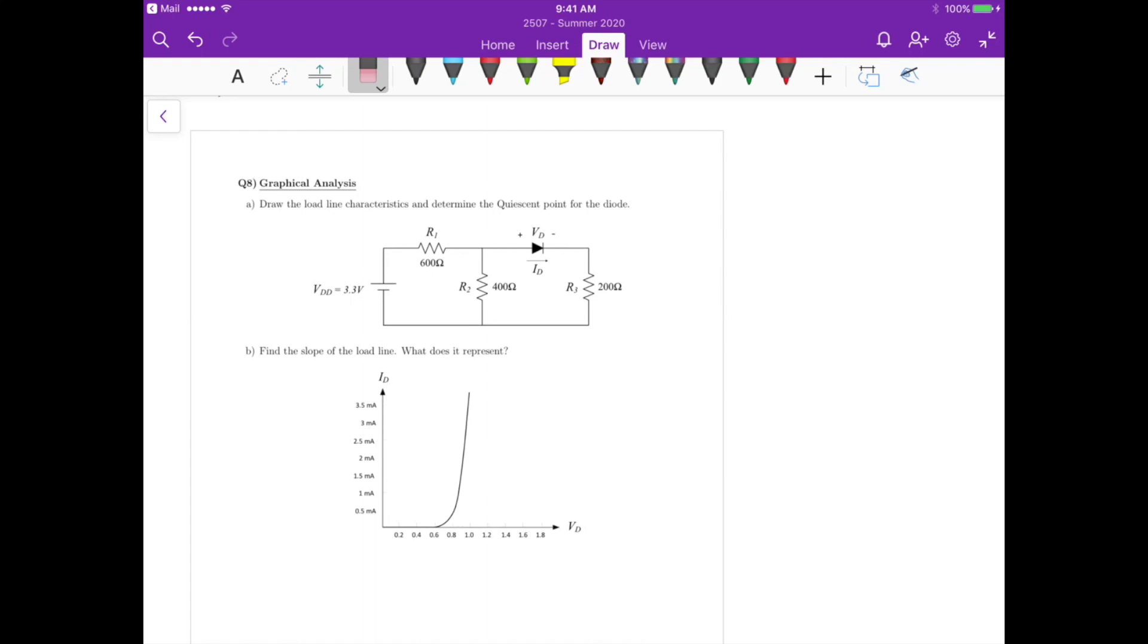For question 8, we have to draw the load line characteristics and determine the quiescent point of the diode in part A. And then for part B, we need to find the slope of the load line and what does it represent.